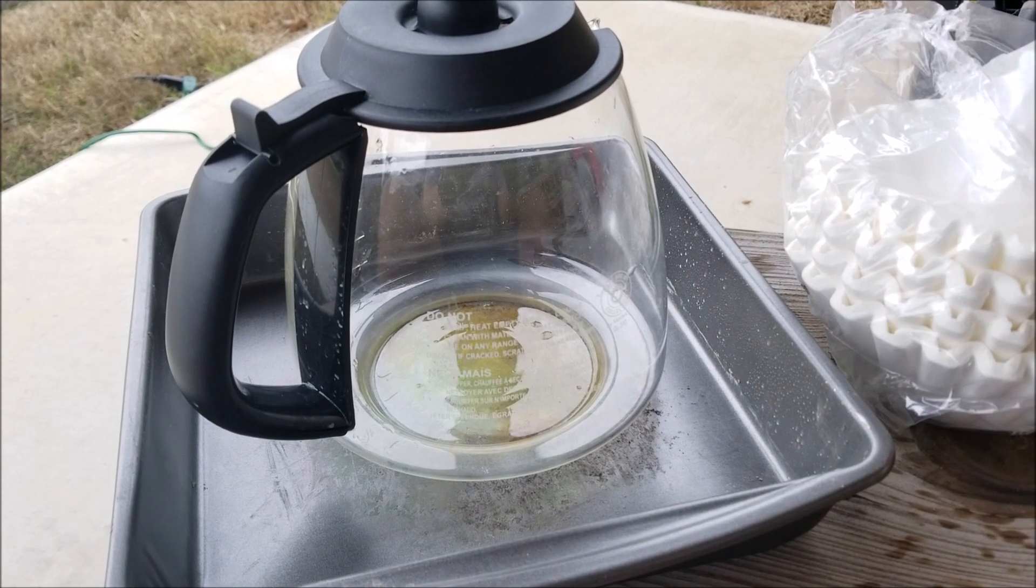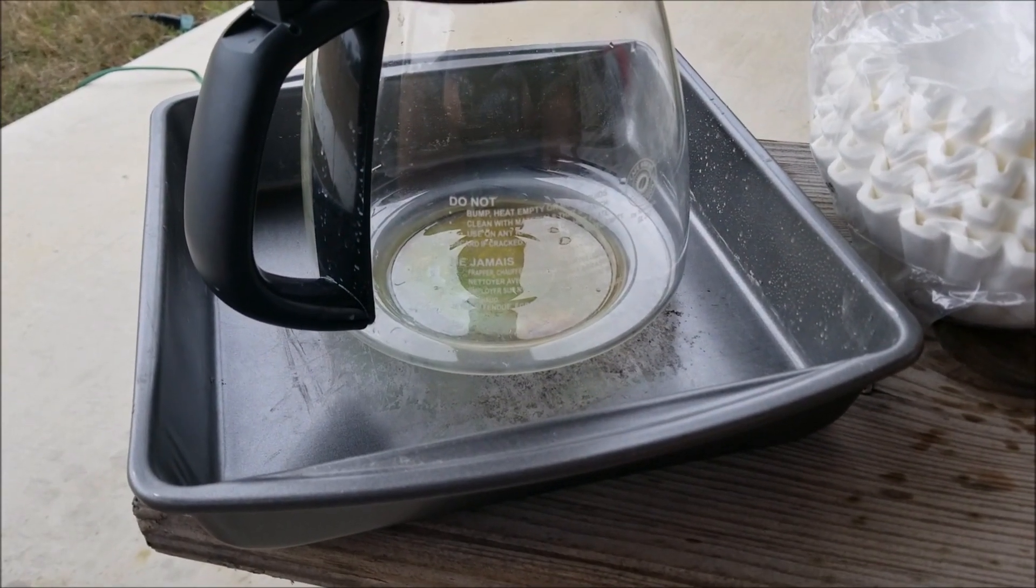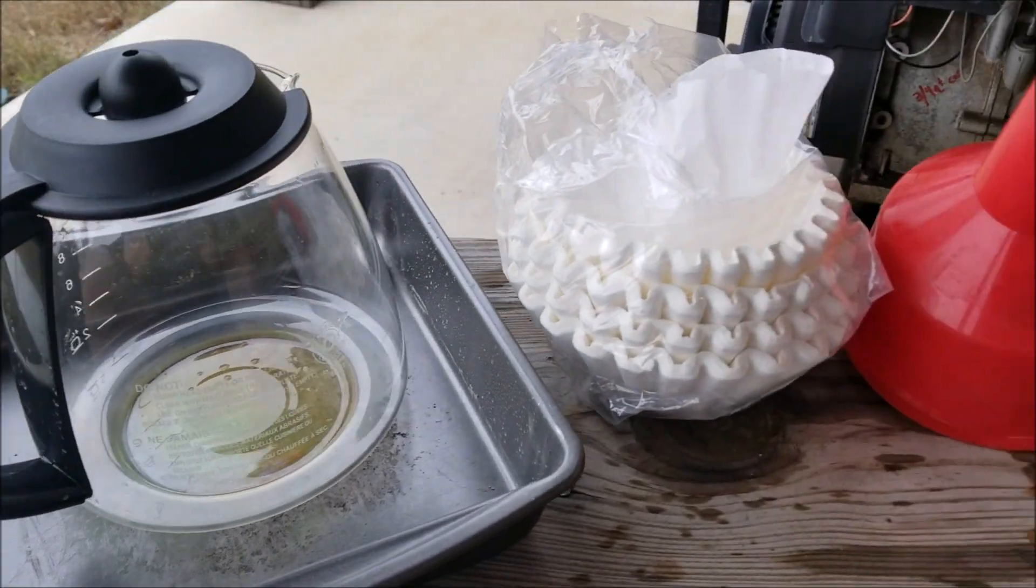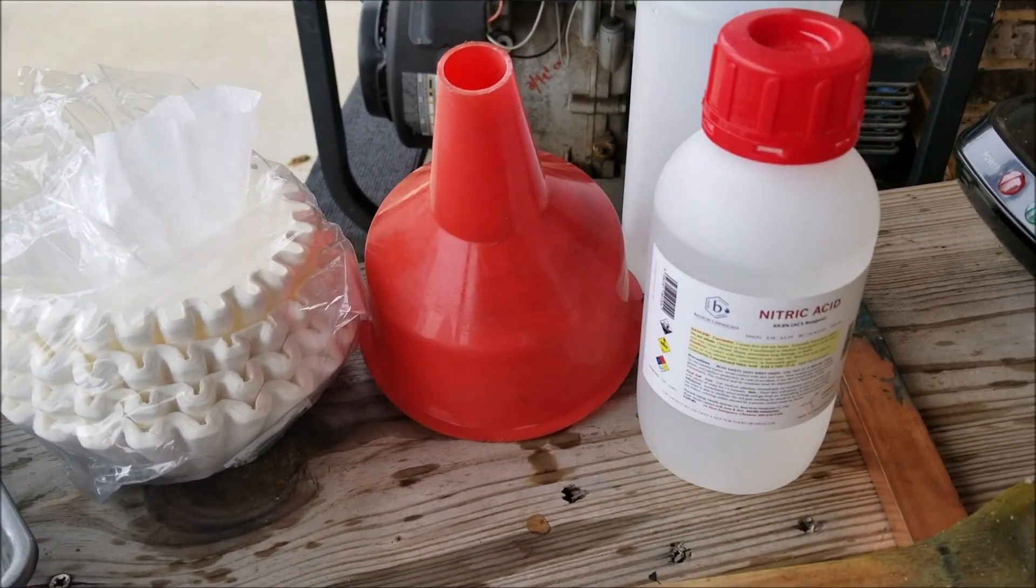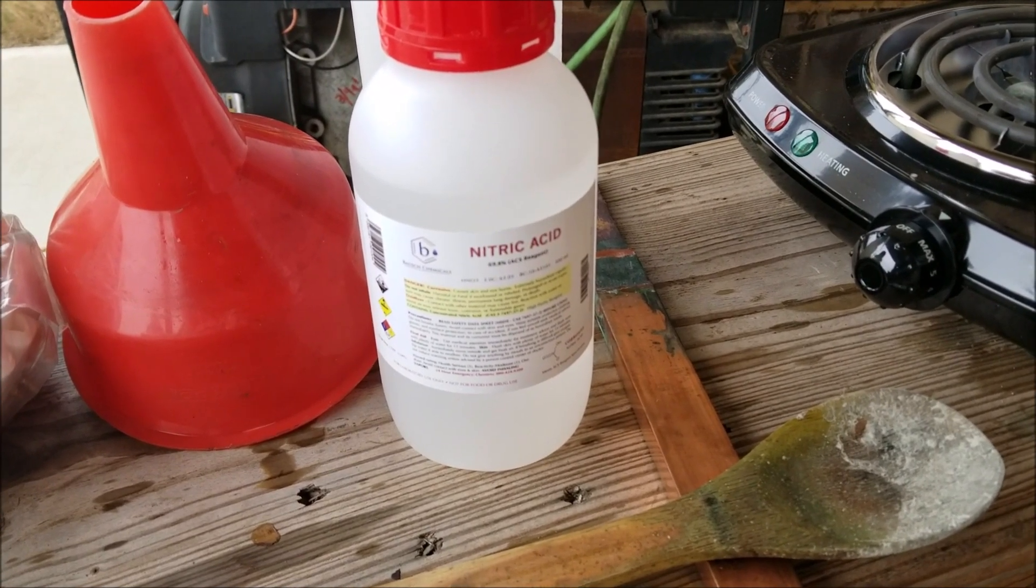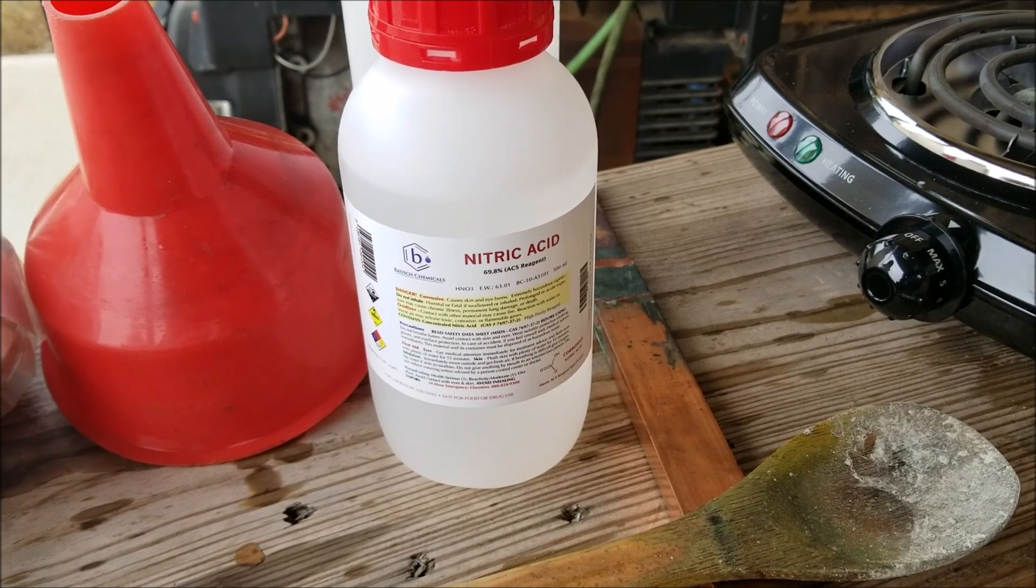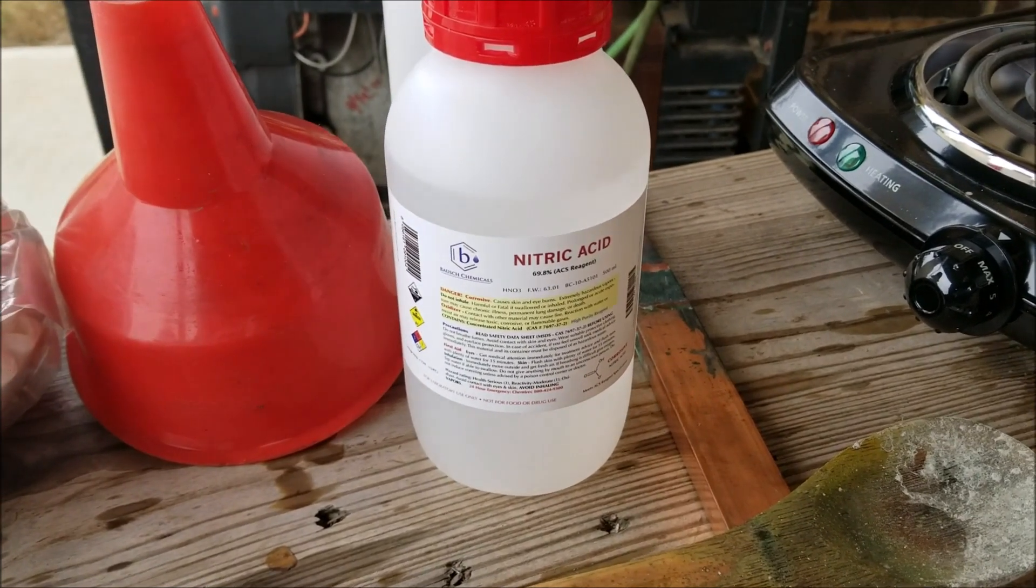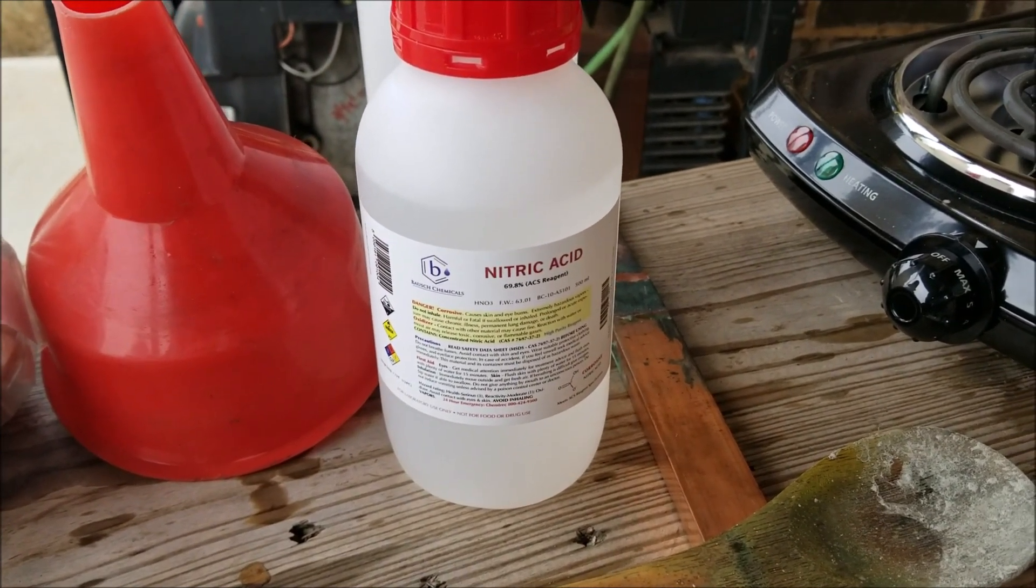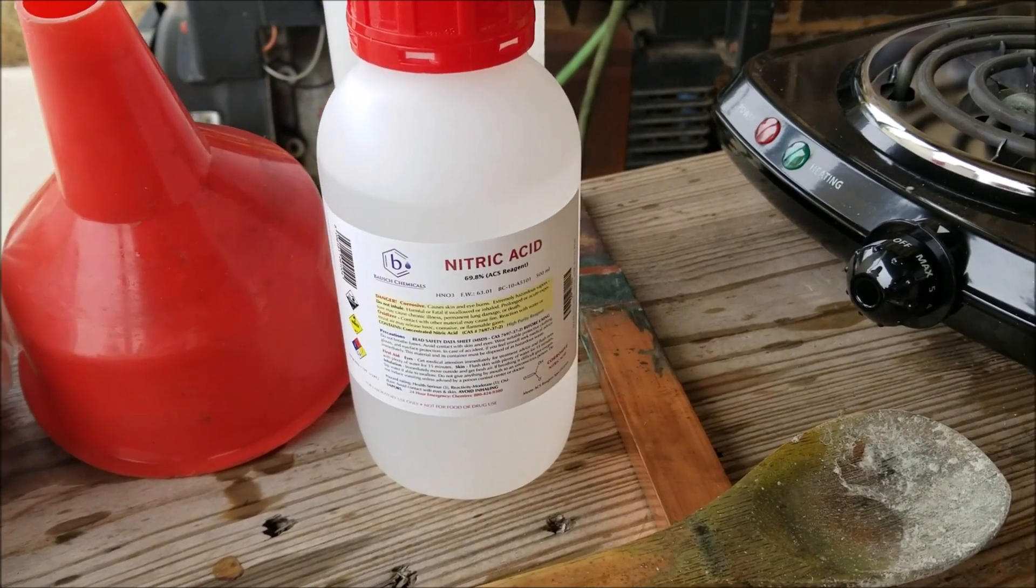A nine by nine cake pan, coffee filters, a funnel, nitric acid - that's the hardest part to get for this whole thing. You can find it online at a chemistry supply store, 68 to 71 percent is generally what you're going to find. However, you can distill your own at a higher percentage if you so choose.